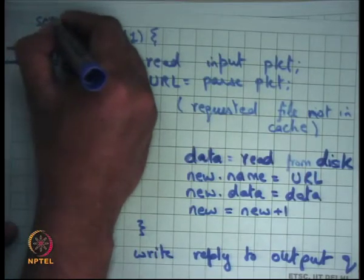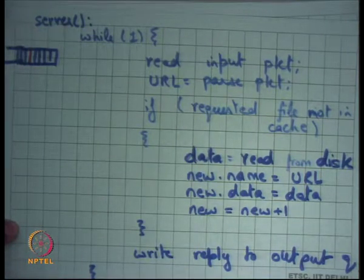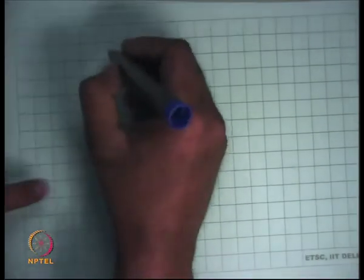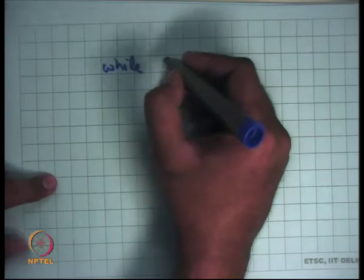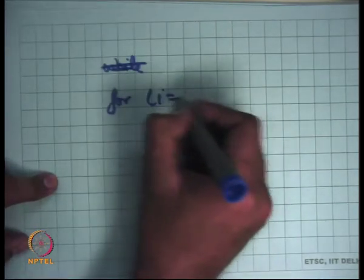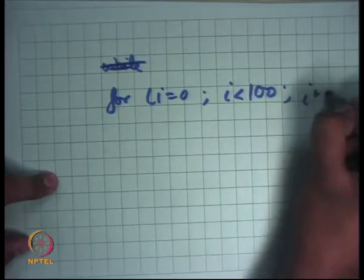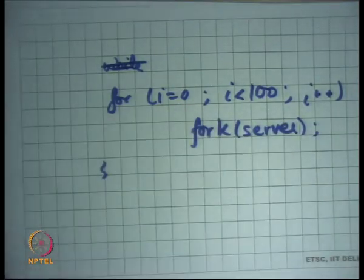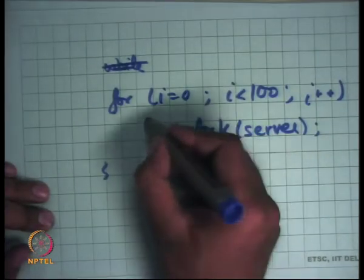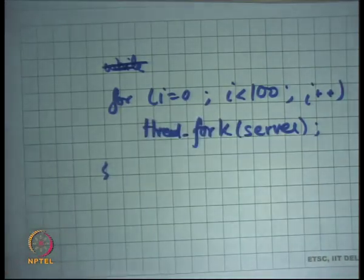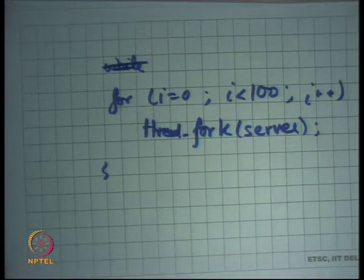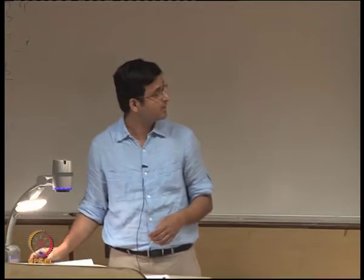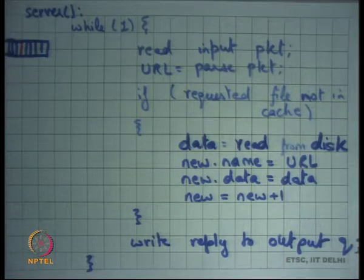One way to implement this: spawn 100 threads that simultaneously execute the server function — `for (i = 0; i < 100; i++) thread_fork(server)`. Now there are 100 threads executing the server simultaneously: some executing on the queue, some waiting on the disk, giving higher overall system utilization.